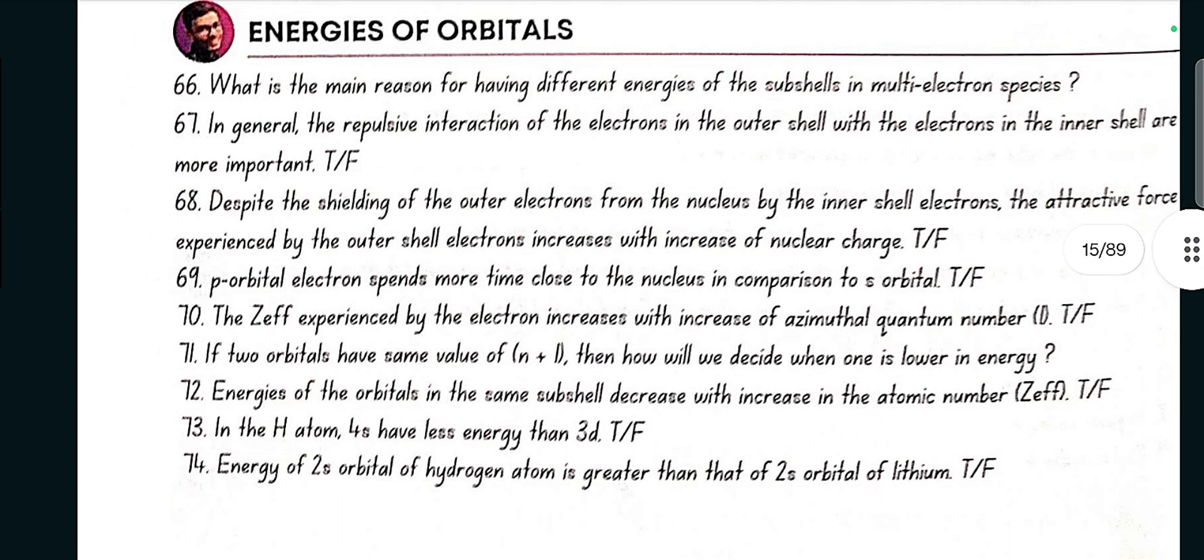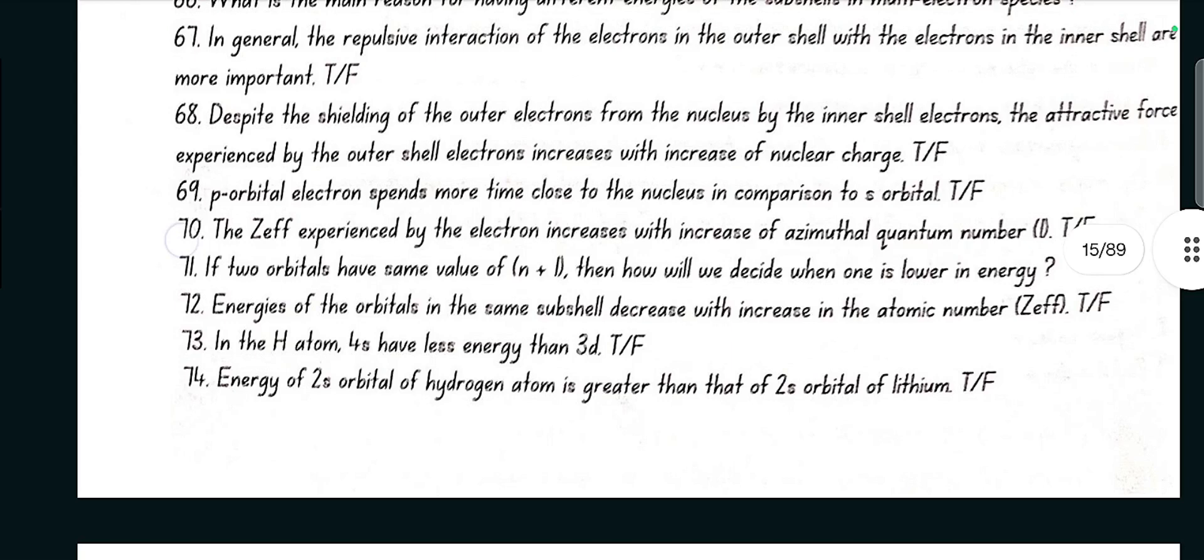Energies of orbitals. What is the main reason for having different energies of the subshells in multi-electron species? Mutual repulsion among the electrons. In general, the repulsive interaction of the electrons in the outer shell with the electrons in the inner shell are more important, yes true. Despite the shielding of outer electrons from the nucleus by inner shell electrons, the attractive force experienced by the outer shell electrons increases with increase of nuclear charge, yes true.